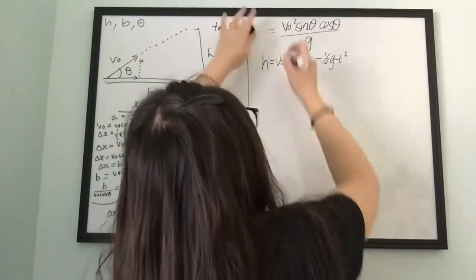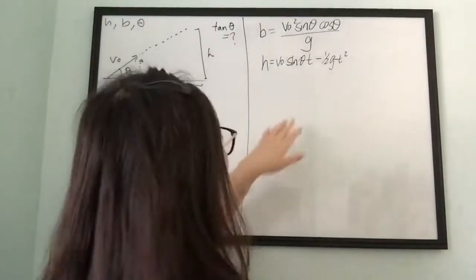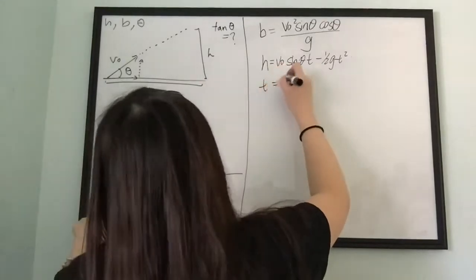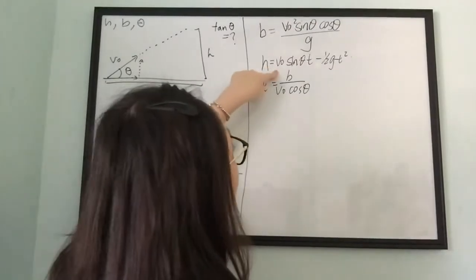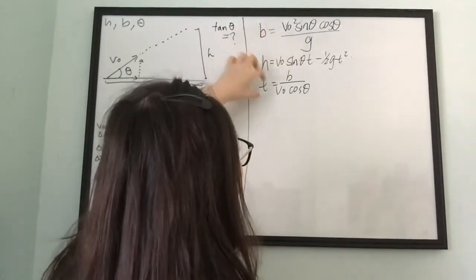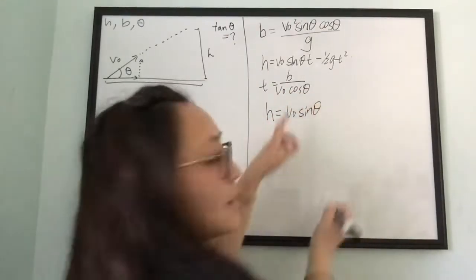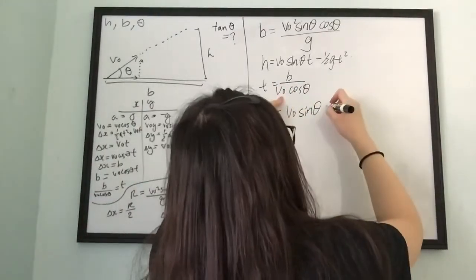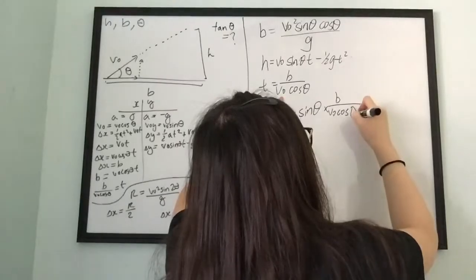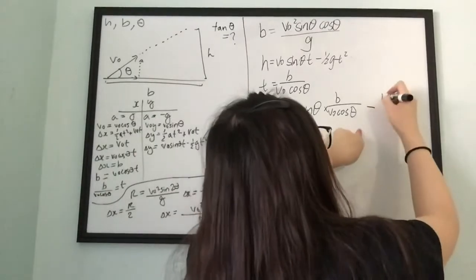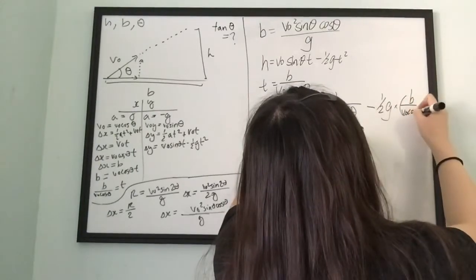And delta-x will be b. We're going to plug everything in. t equals b over v-naught cosine theta — that's a major equation. Substituting in, h equals v-naught · sine(θ) times (b over v-naught cosine θ) minus one-half g times (b over v-naught cosine θ) squared.